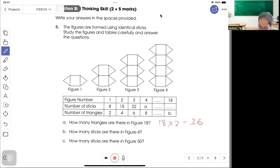Part B: How many sticks are there in Figure 4? Look carefully. Figure 1 is 8, and another 7. Figure 2 is 15, and another 7. So Figure 3 is 22 plus 7. That is the answer, 29.